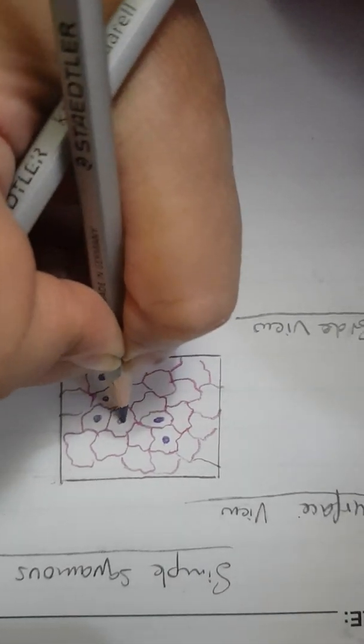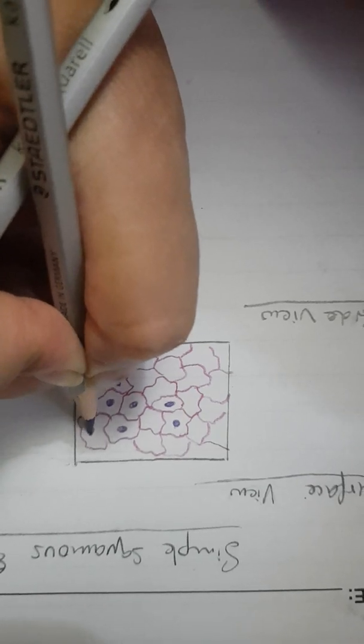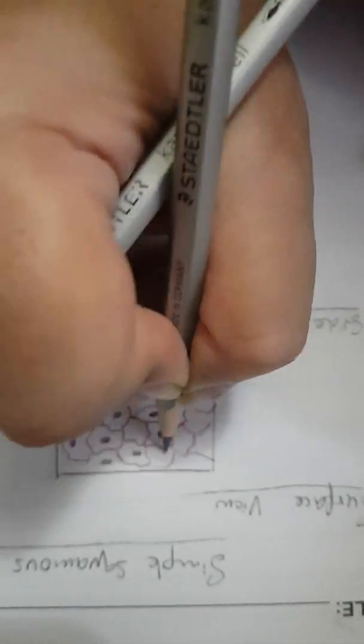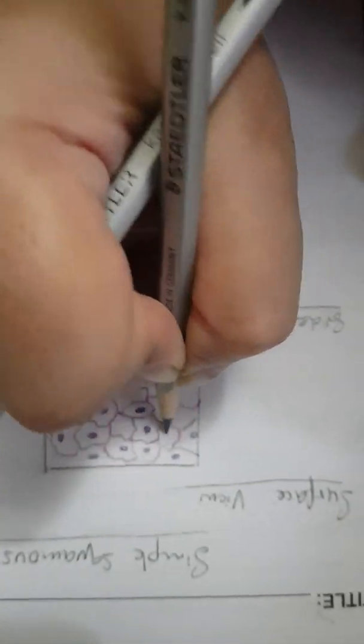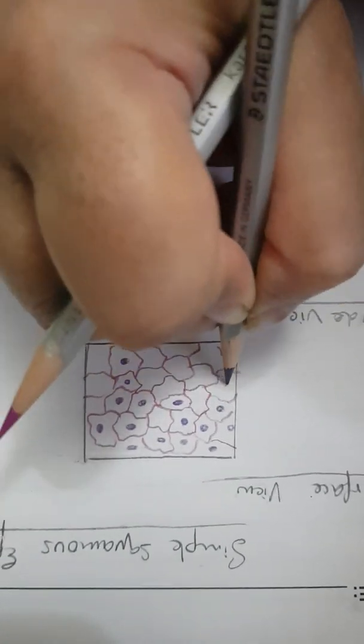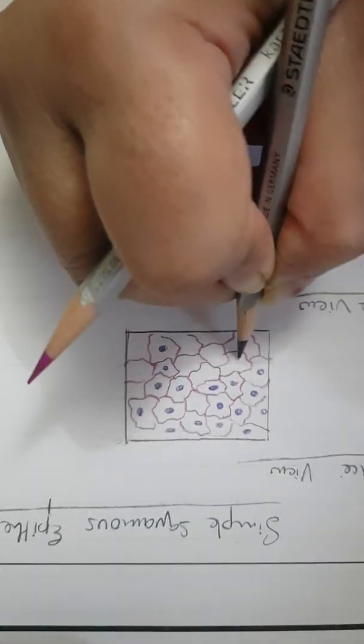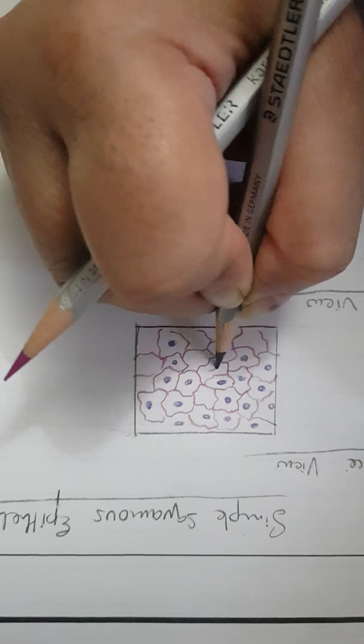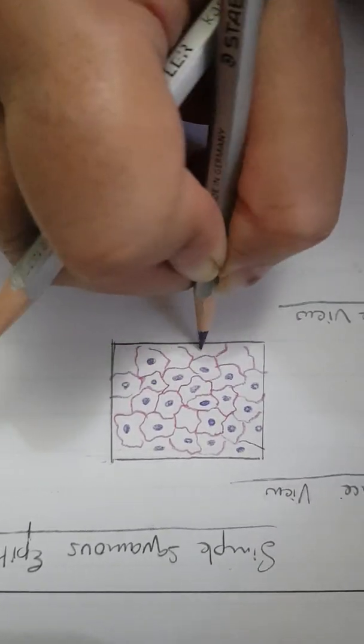Draw nuclei here - spherical nucleus or ovoid nucleus in the center.